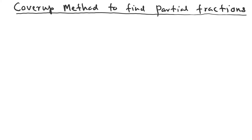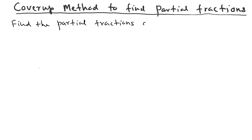Let's learn the cover-up method to find the partial fraction decomposition. We'll do this problem: find the partial fractions of 2s² + s − 1 over s(s − 1)(s + 2).